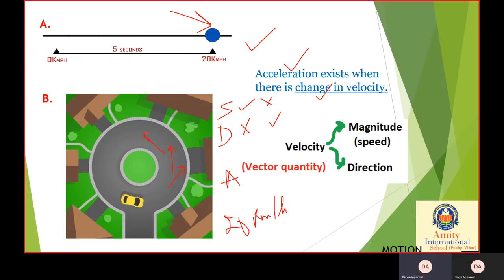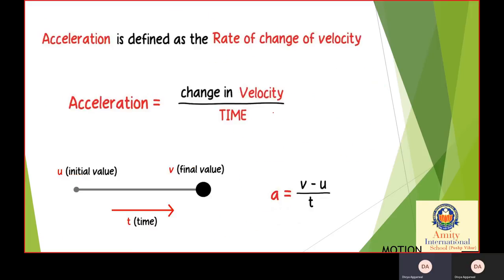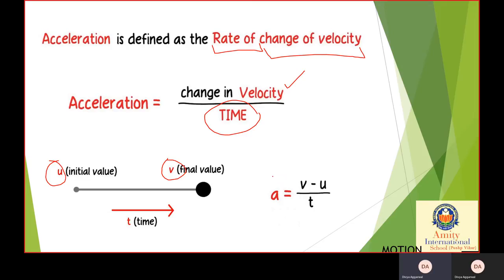Acceleration is a vector quantity. If you want to know more about scalar and vector, you can check out our other videos. The formula for acceleration is the rate of change of velocity: A equals final velocity (V) minus initial velocity (U), divided by total time (T).